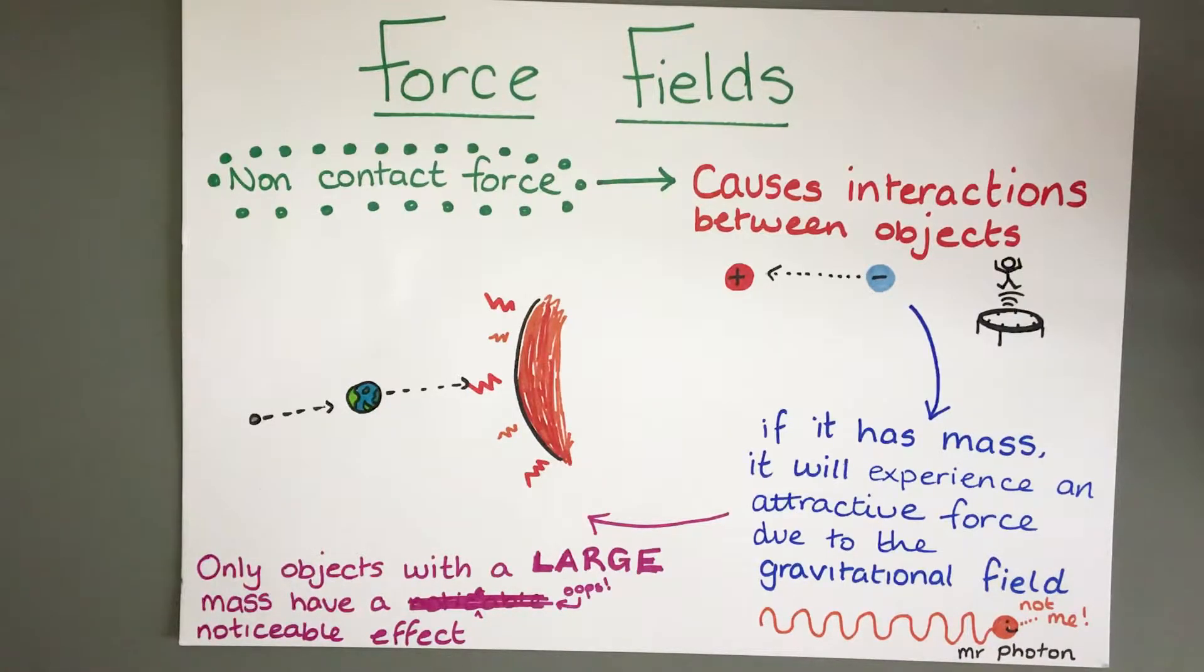Any object with a mass will experience an attractive force. The main thing we need to make very clear with gravitational fields is it is purely an attractive force and that only happens if an object has mass. For instance, a photon will not experience a gravitational force because it doesn't have a mass.